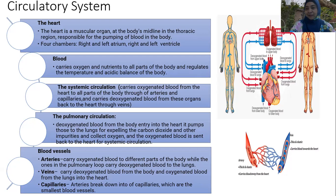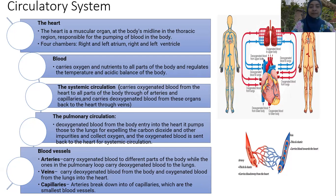When the blood is fully filled with oxygen from the pulmonary system, it will be carried to the heart, and the heart will bring it to the whole body system. We have three types of blood vessels: arteries, veins, and capillaries.